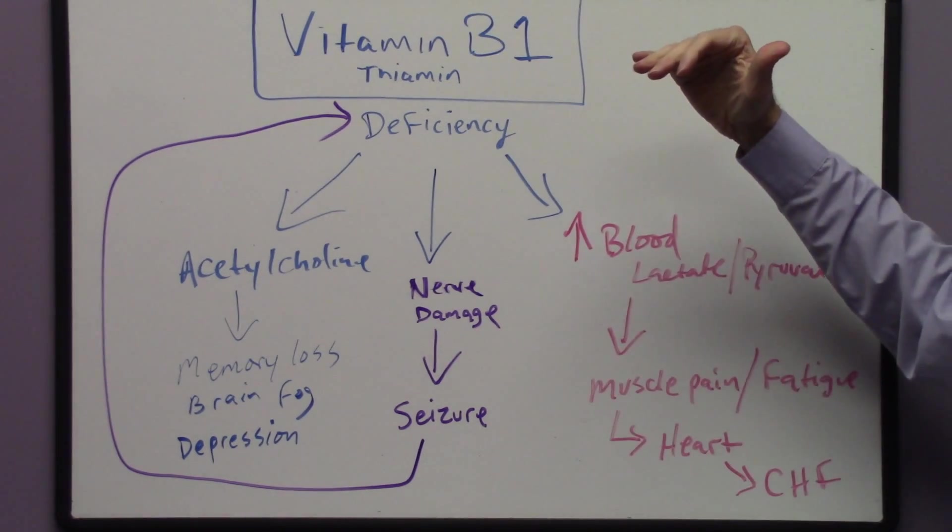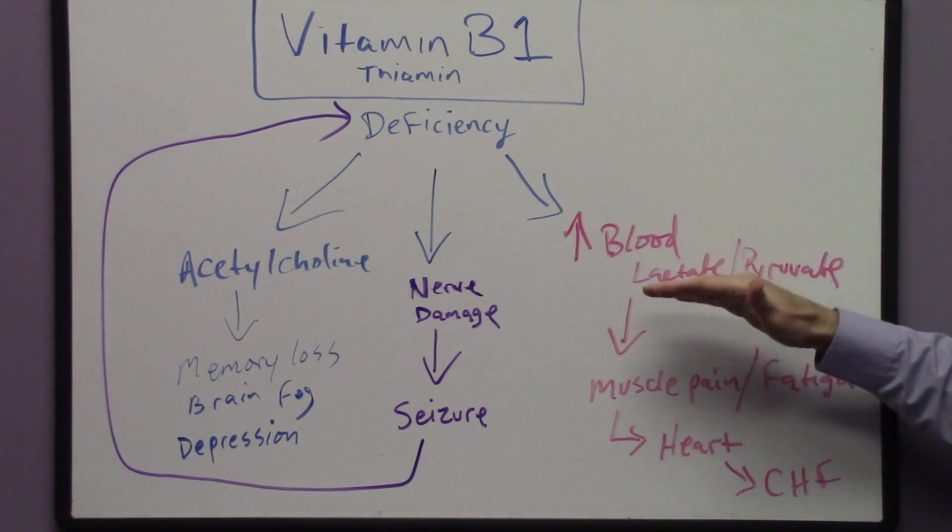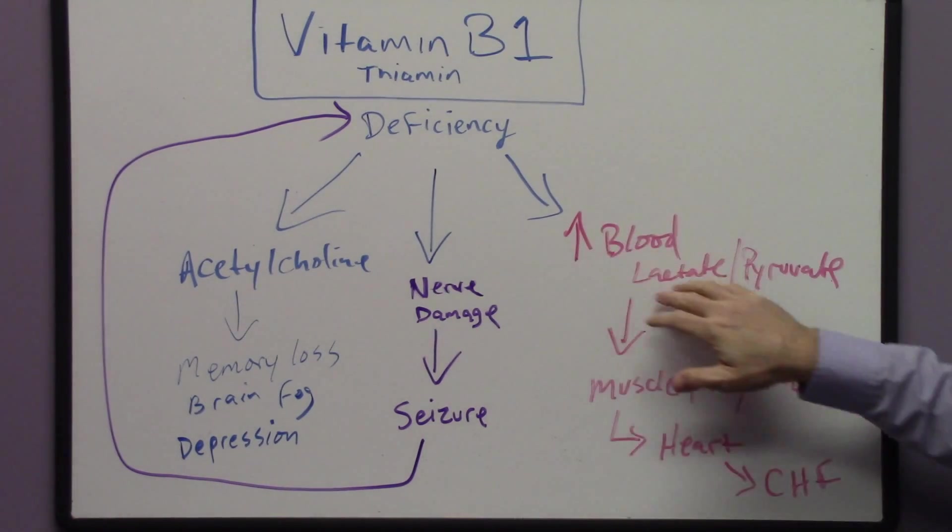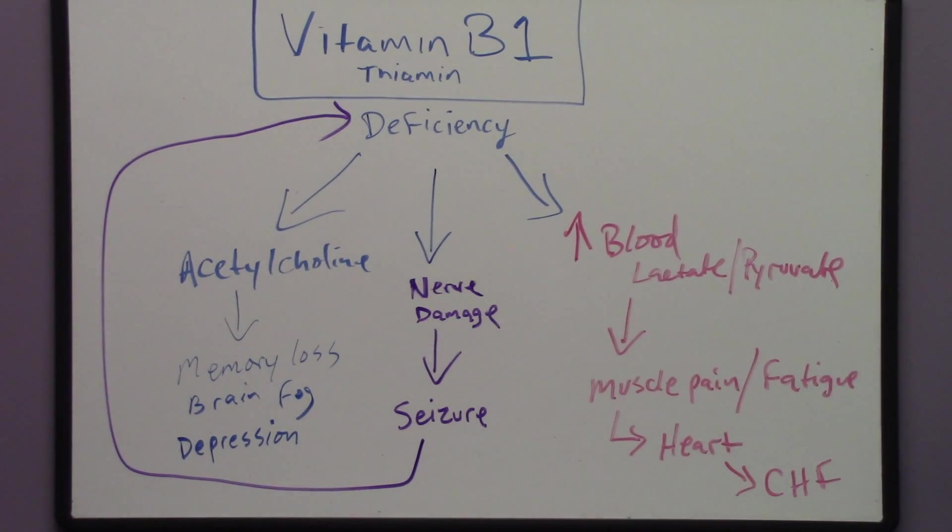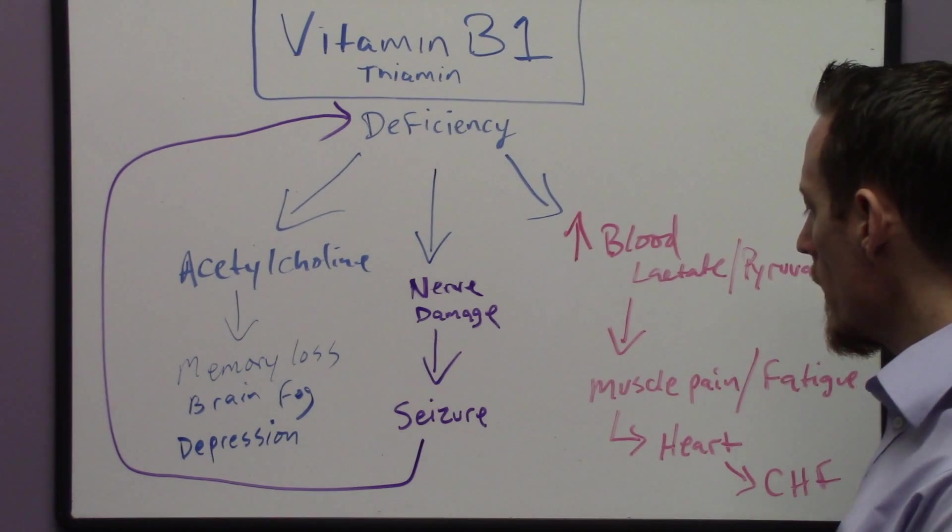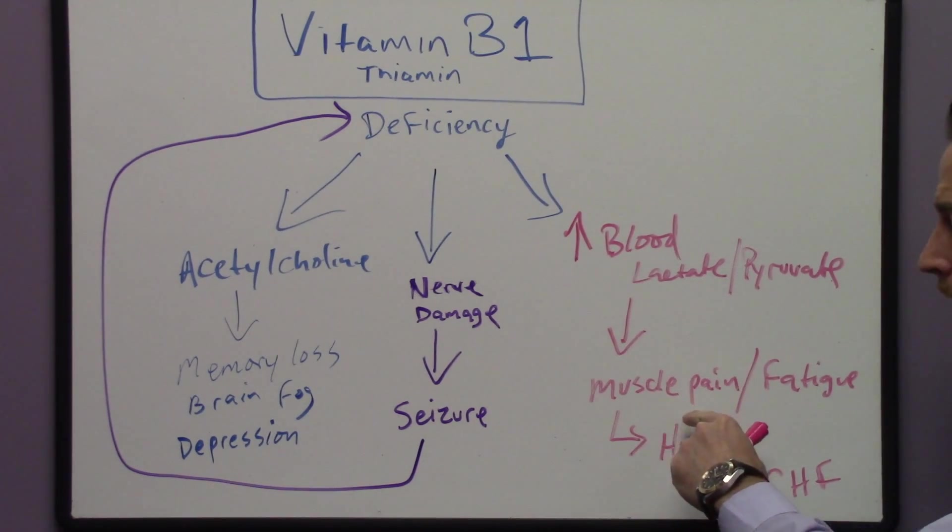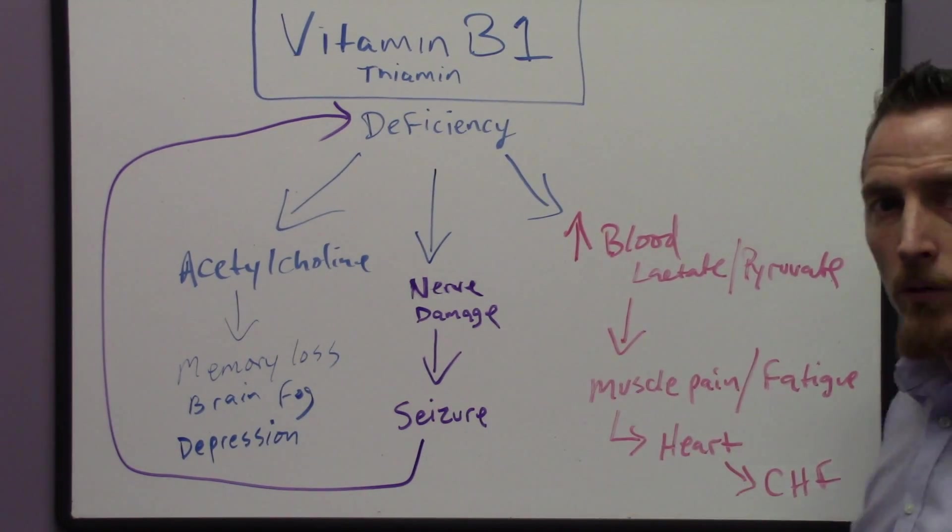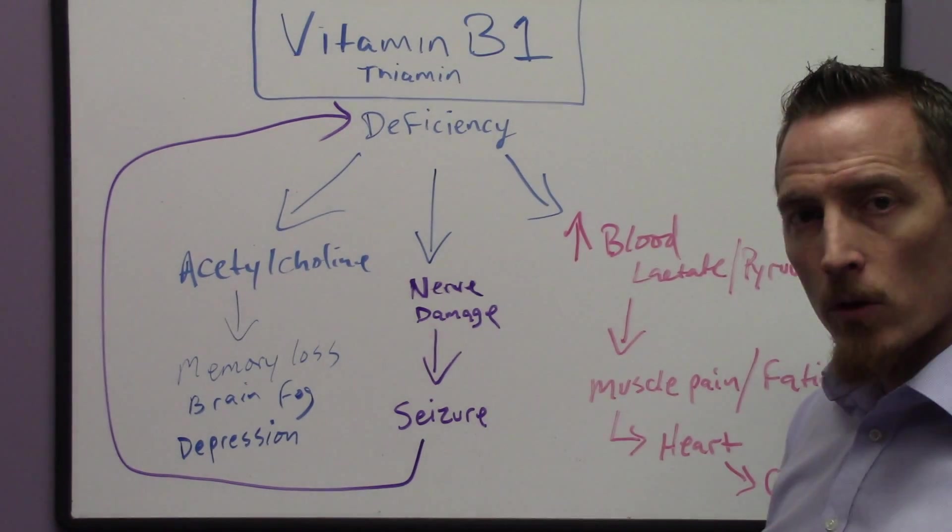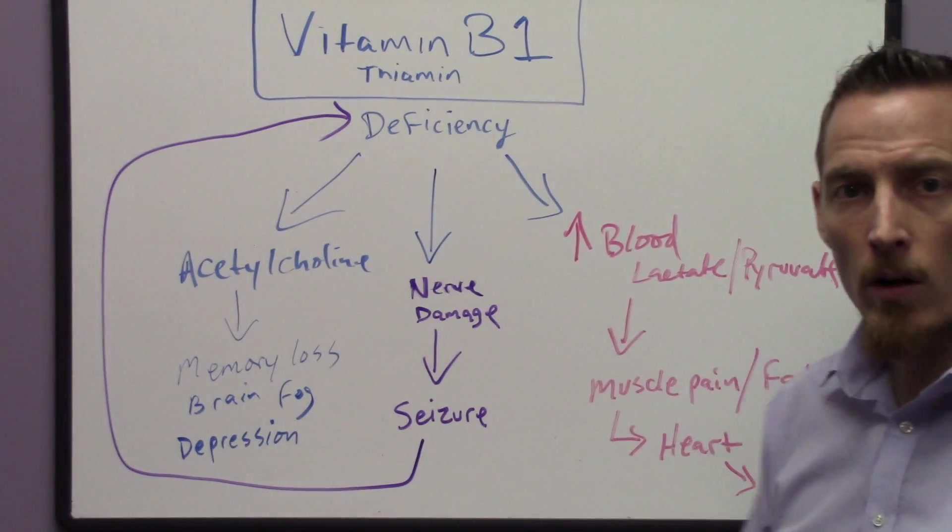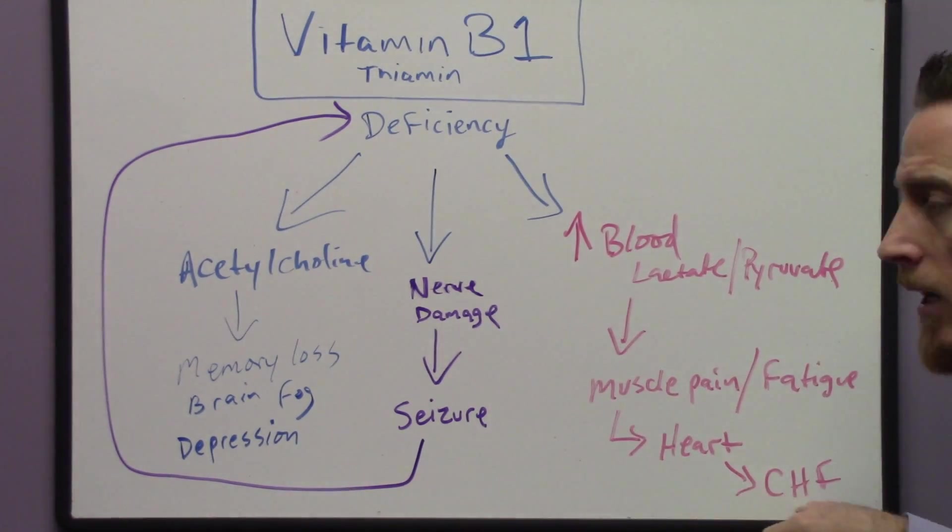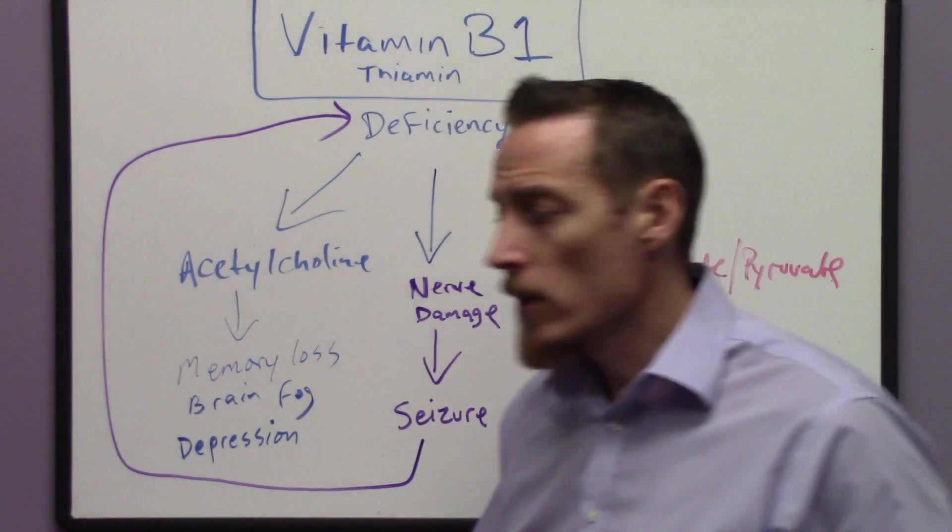So again, we take a person who's vitamin B1 deficient, they develop this abnormal chemical parameter in the blood which leads to increased acidic buildup and lack of the ability to produce energy. That leads to muscle fatigue, muscle pain, as well your heart is a muscle, so we get that same fatigue and that same reduced energy capacity in the heart to produce energy and that over time leads to congestive heart failure.